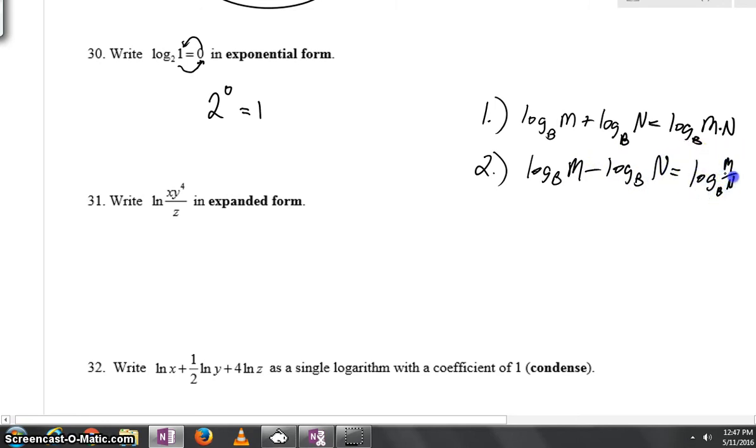And at this point, we also have a third kind of a property, log base B of A to the C power. We can drop that C down and get C times log base B of A.